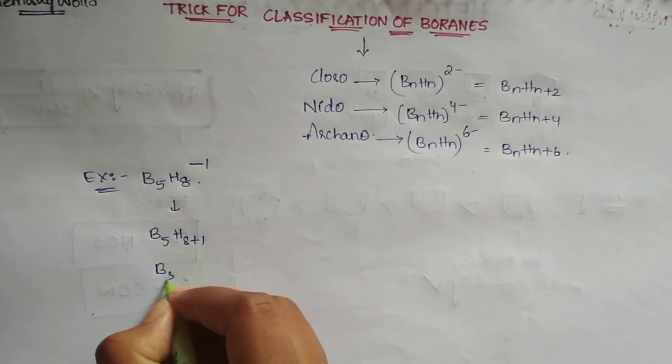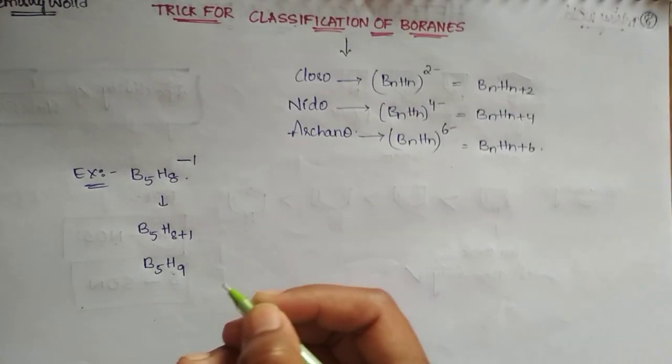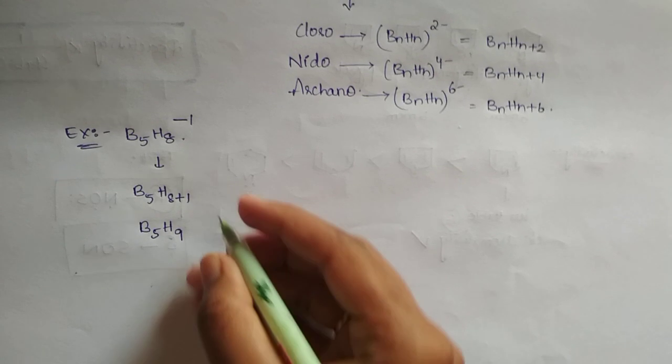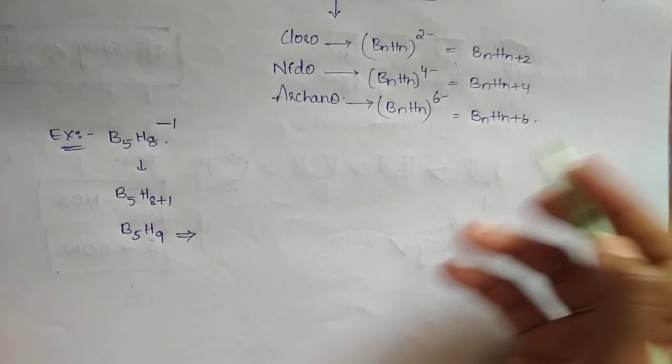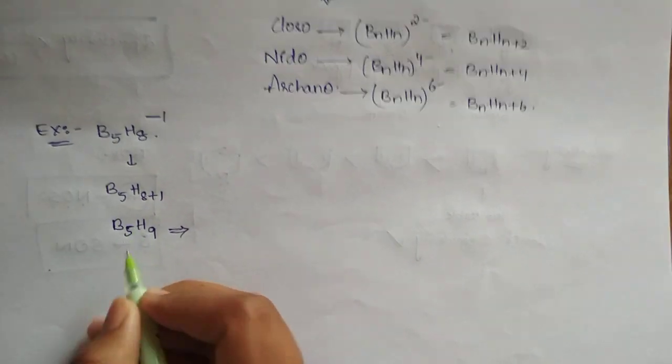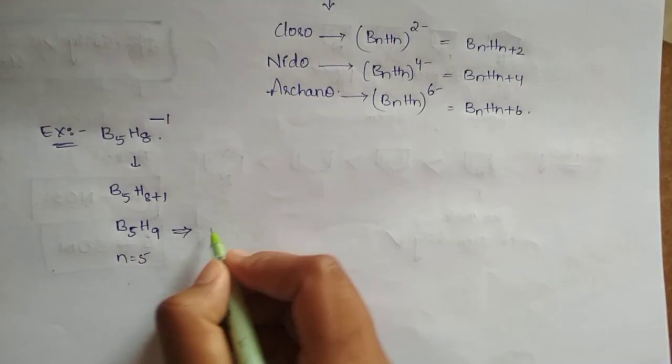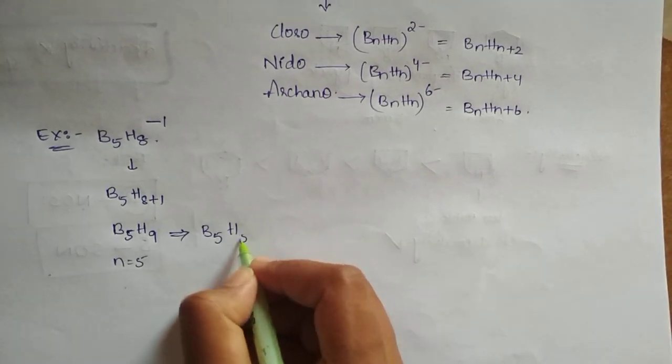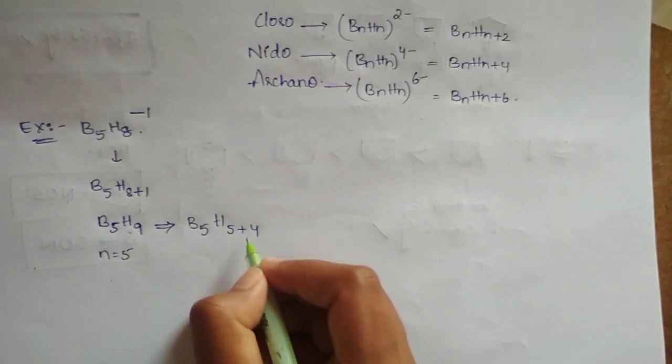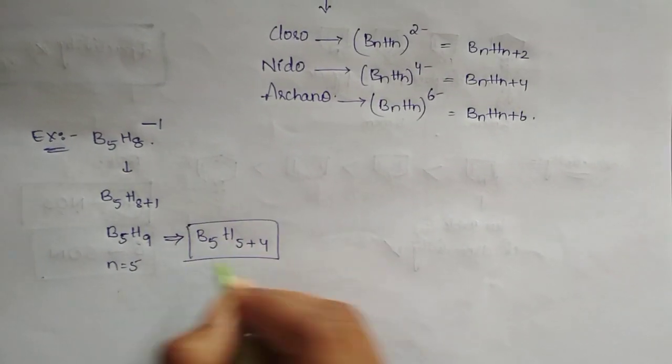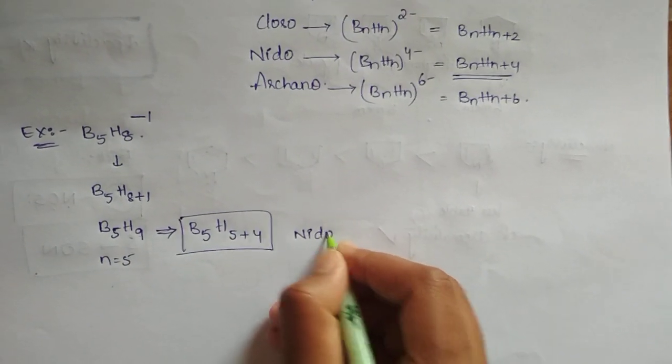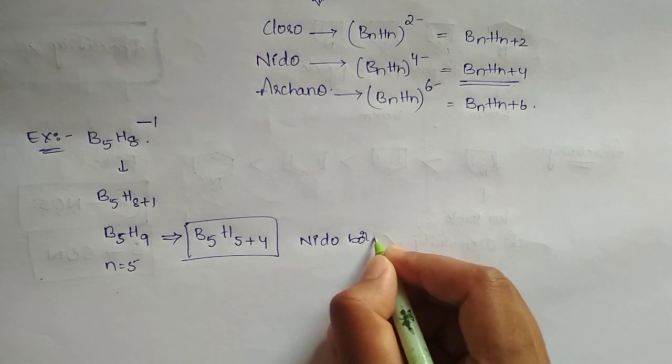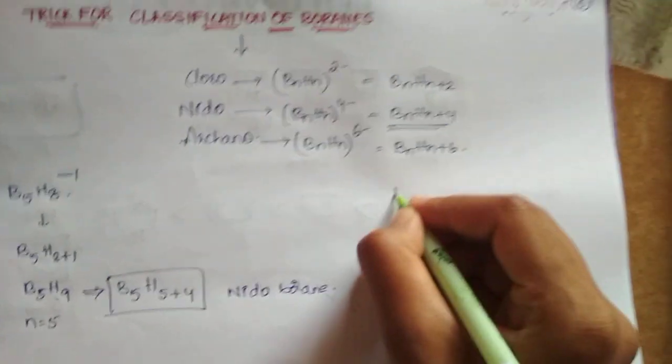Therefore B5 H9, and it can be written in this type of form. Here N equals 5. Then we have to write B5 H5 plus what? 4 remaining. Then it is in the form of Nido, so it is Nido boranes.